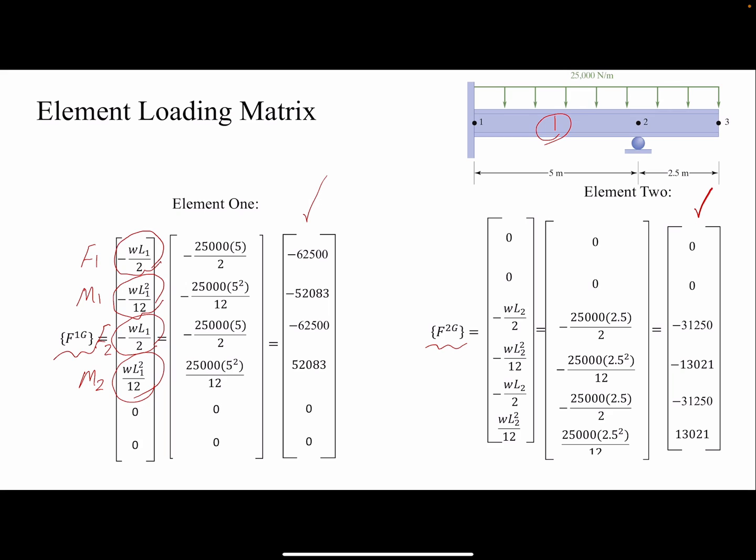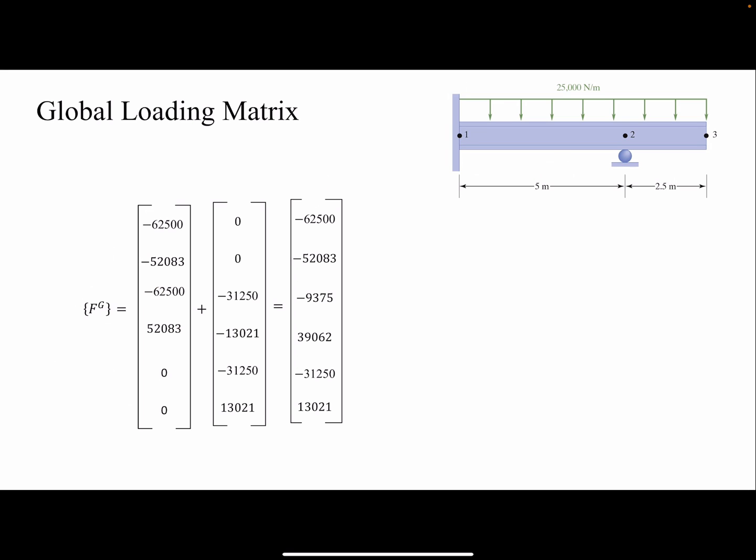The difference between the two is just the length that we have here for our first element and our second element. If you want to find the global loading matrix, we just add them together, and then we have our global loading matrix.